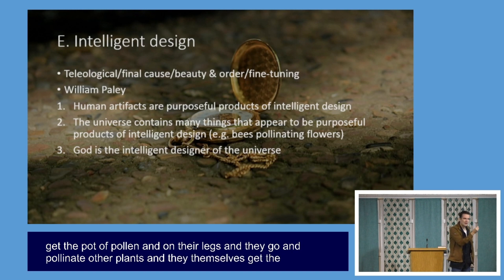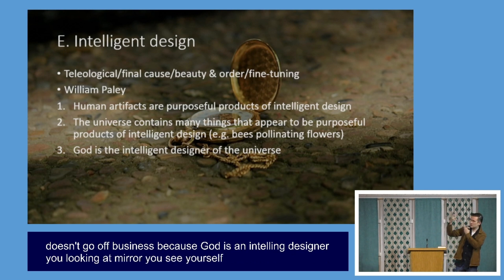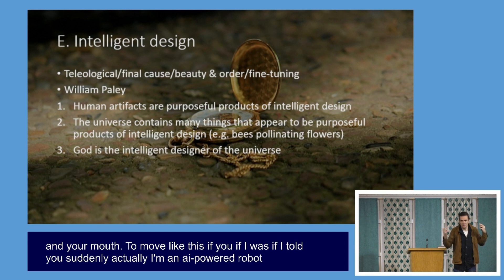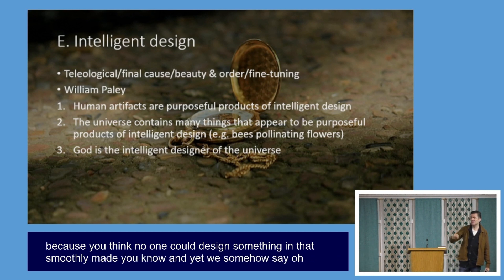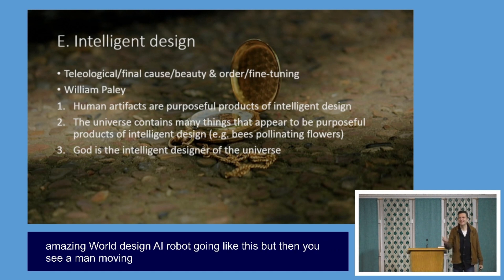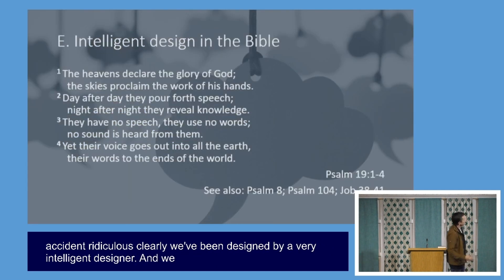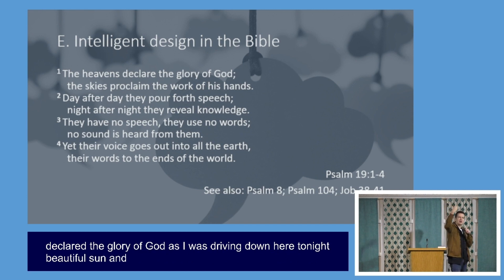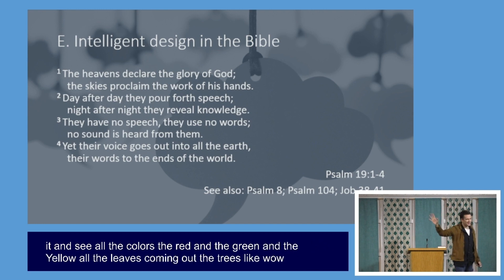Trees breathe out oxygen and breathe in carbon dioxide, and we do the opposite — extremely convenient. Bees get pollen on their legs, pollinate other plants, and get nectar to create honey — the only food that doesn't go off. You look in a mirror and see yourself moving around: your brain tells your hands, eyes, and mouth to move like this. If I were an AI-powered robot you'd be blown away. And yet we somehow say it all came about by accident — it's ridiculous. Clearly we've been designed by a very intelligent designer.